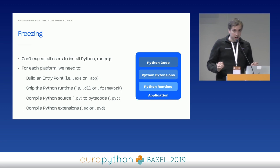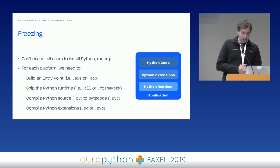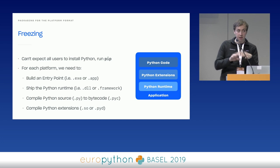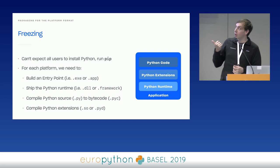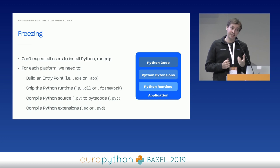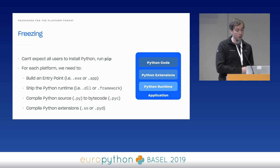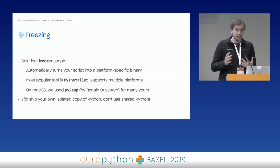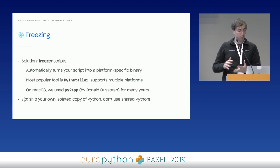So how do you take all this first-party and third-party code and turn it into an app? Each app format varies from one platform to the next. There are basically four things you want: one, build the native entry point (a .exe on Windows, a .app on Mac); two, ship Python itself — the Python DLL or framework; three, take all your .py files and turn those into .pyc files; four, compile all your Python extensions into shared objects or PYDs. This is a lot of work, but thankfully there are solutions — what we've been calling the 'freezer libraries.' These turn your script into a platform-specific binary, doing all four steps for you. PyInstaller is one of the most popular right now. On macOS we used py2app for many years.